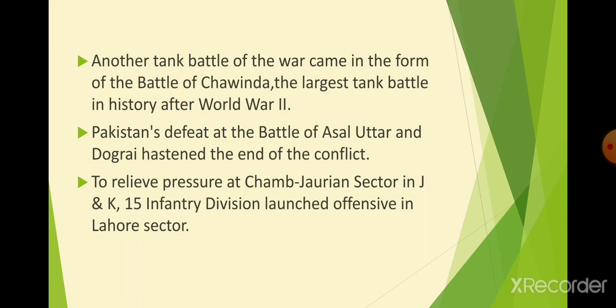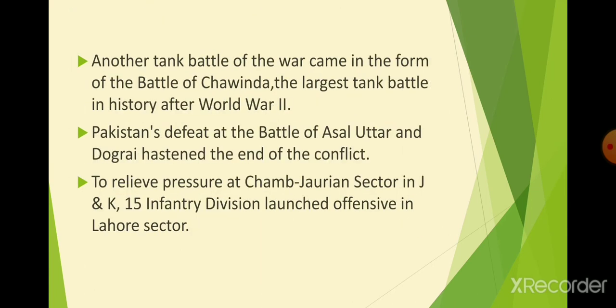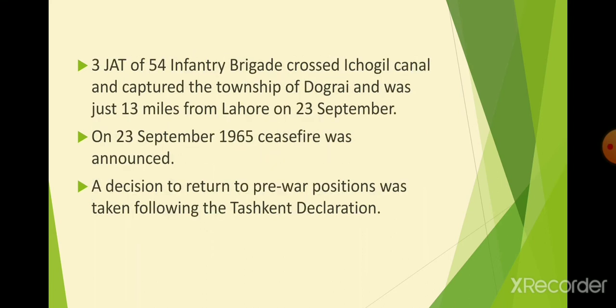In the Battle of Asal Uttar and the Battle of Dograi, Indian forces performed strongly. In the Battle of Dograi, the 3 Jat of the 54 Infantry Brigade crossed the Ichhogil Canal and captured the township of Dograi. The Pakistani forces were defeated at Dograi. The 3 Jat of the 54 Infantry Battalion also distinguished themselves in this battle. This effectively ended Pakistan's attempts to take Jammu and Kashmir or overwhelm the Indian forces.